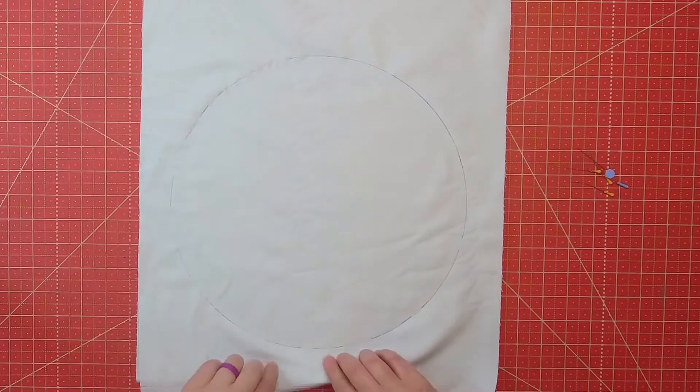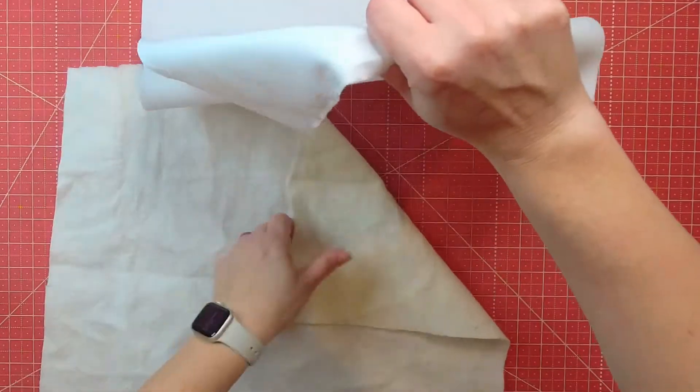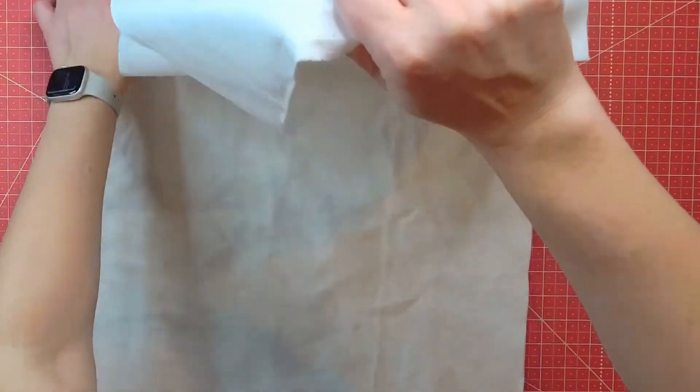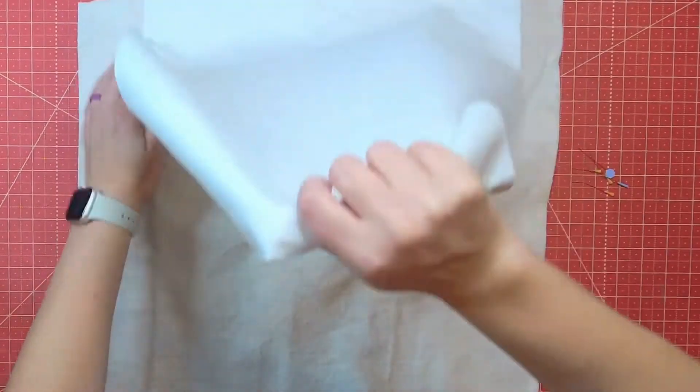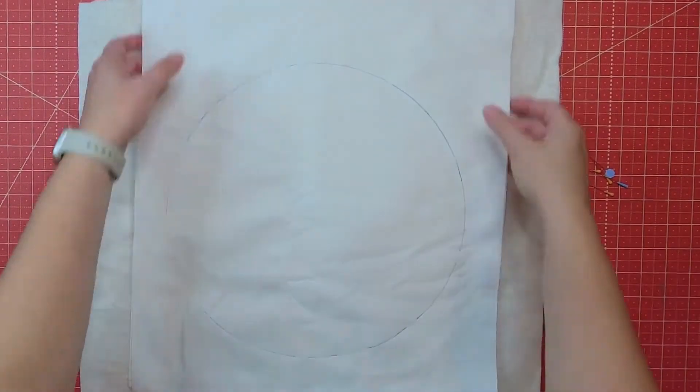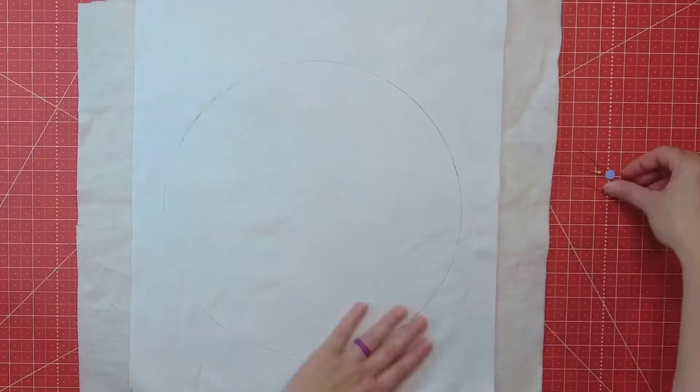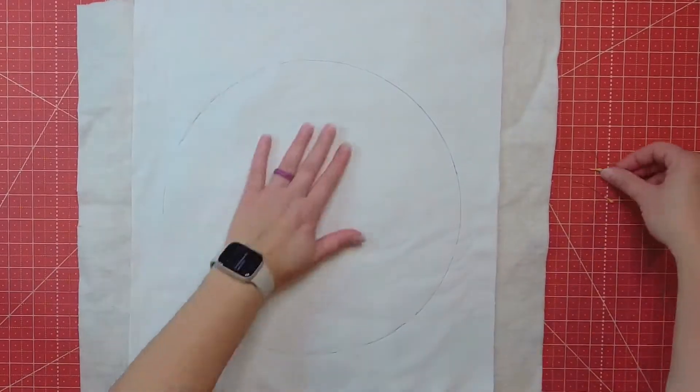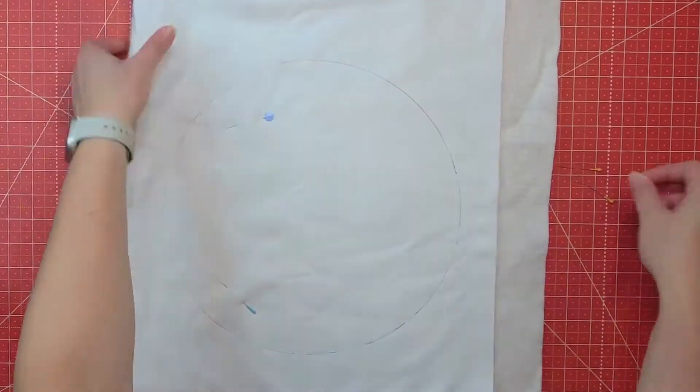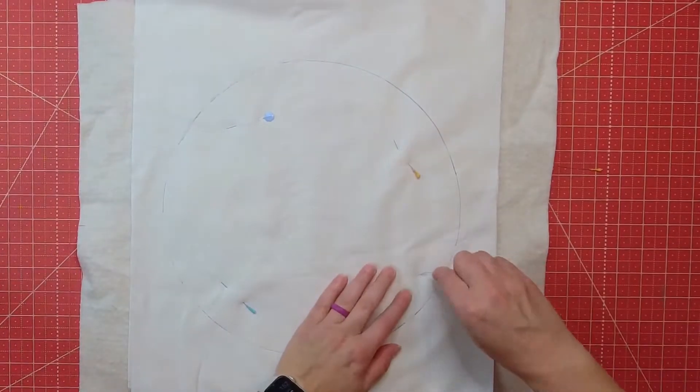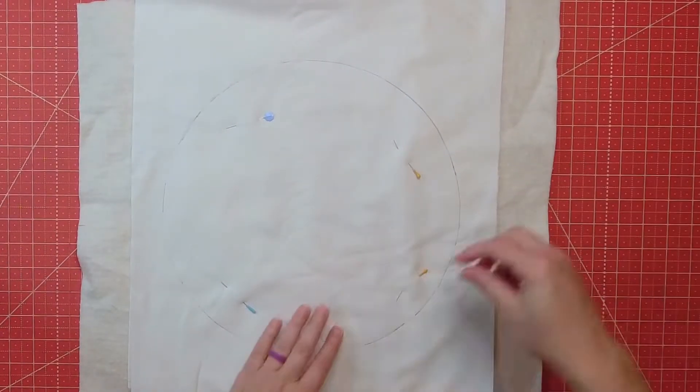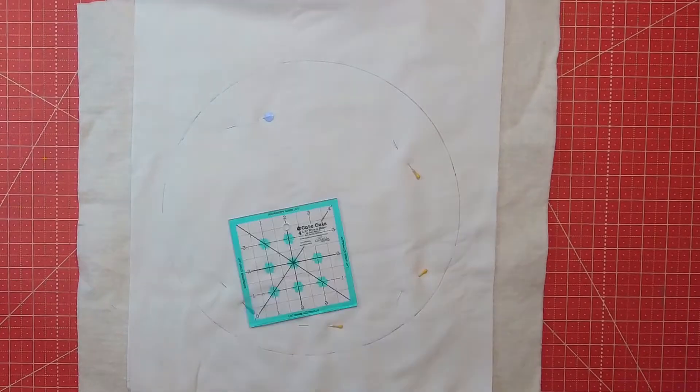Now, before I cut out the two layers of fabric I have here for the front and back of the pillow, I'm going to put my batting down so I can just go ahead and cut it all out at once because I'm actually going to use one of my rulers to cut this out. So I'm placing a few pins just so everything doesn't shift when I am cutting, just keep everything in place for me a little better.